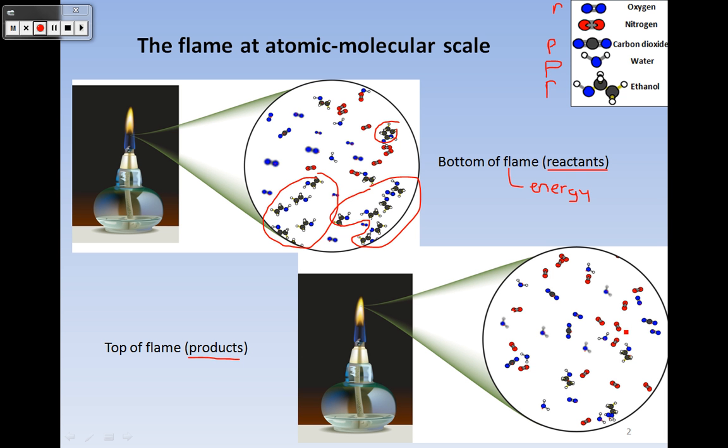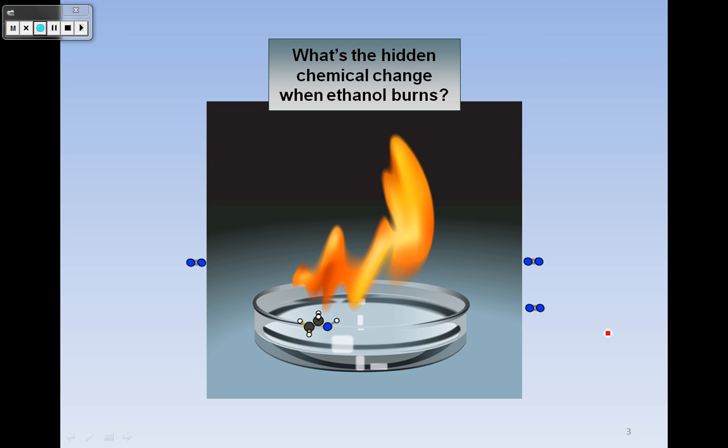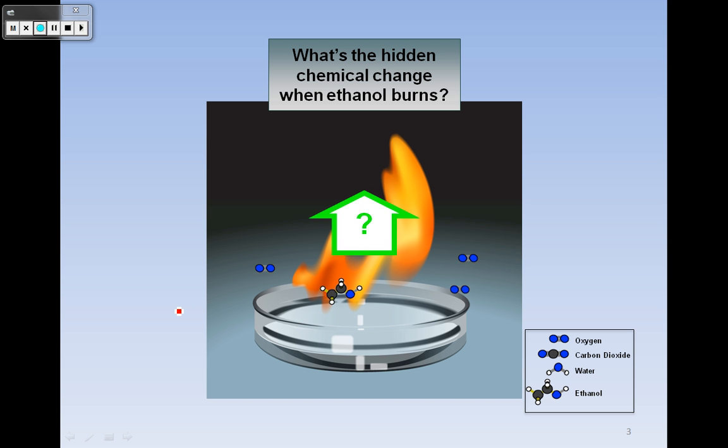All right so let's look at this, the hidden chemical change when ethanol burns. So here we've got ethanol burning and here we've got our reactants, we've got our ethanol here and we've got our oxygen here. Let's see what's actually happening.